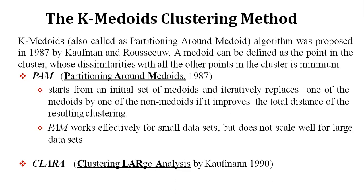What is the meaning of a medoid? A medoid can be defined as the point in the cluster whose dissimilarities with all the other points in the cluster is minimum. The data points will be grouped into different clusters based on similarities. A medoid is a data point in the cluster — whether the cluster has hundreds of points or just five or six — whose dissimilarities with all other points in that cluster is minimum.